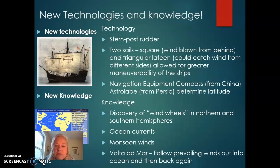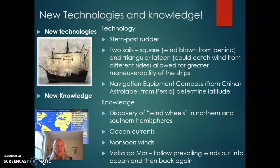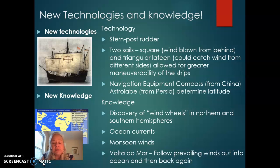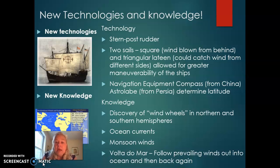New technologies and knowledge were also critical. The stern post rudder was a rudder that actually went through the boat, not just controlled from the back as small sailboats nowadays have, and this allowed for much greater control. Ships now sailed with a huge number of sails. Looking at ships from the 16th and 17th century, they had both square sails, which catch wind from behind and increase speed, and lateen sails, which are triangular and can catch wind from all different sides and be maneuvered very easily.